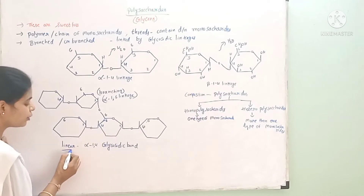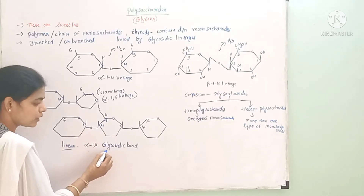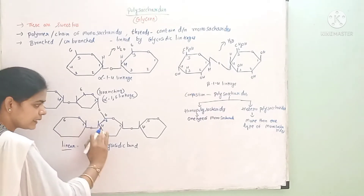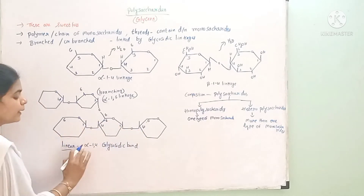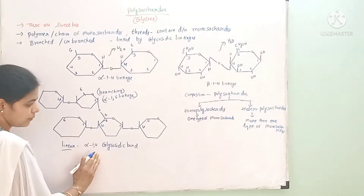In a linear formula, we have alpha 1,4 glycosidic bond. For beta sugars, we have beta 1,4 glycosidic bond.